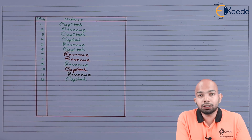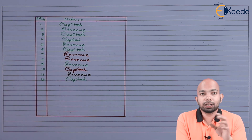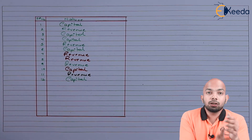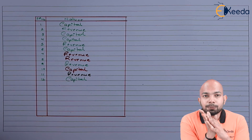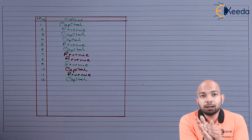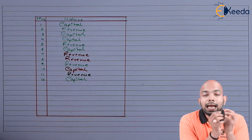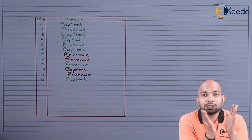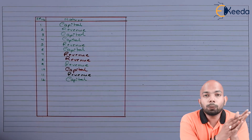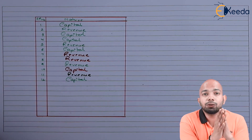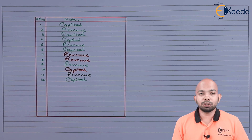I hope with this illustration it was clear how transactions can be classified into capital or revenue nature. Things that are not recurring and add to value or reduce cost are of capital nature. Things that are recurring and required for regular operational activities are termed revenue expenses. Thank you for watching this video. Stay tuned with eKIDA and keep subscribing.